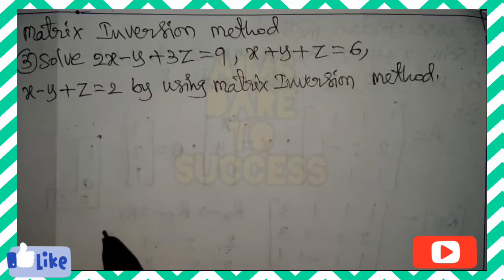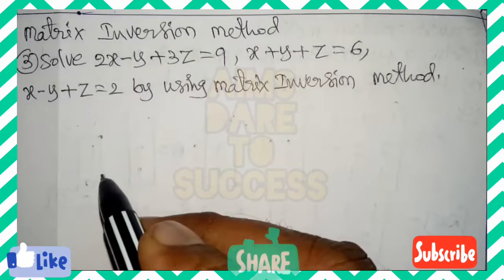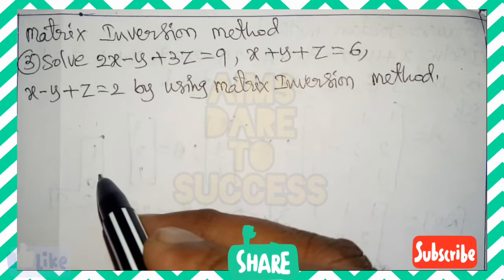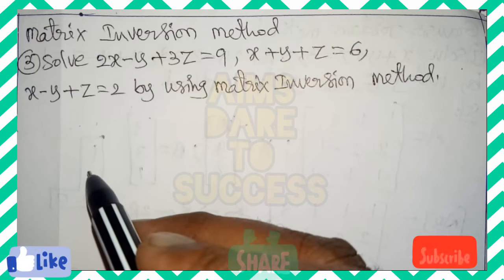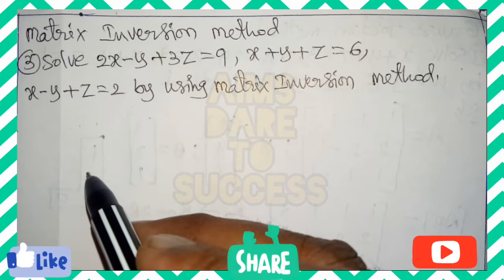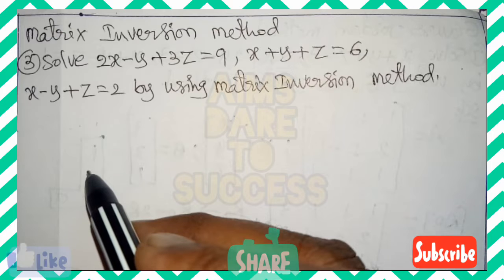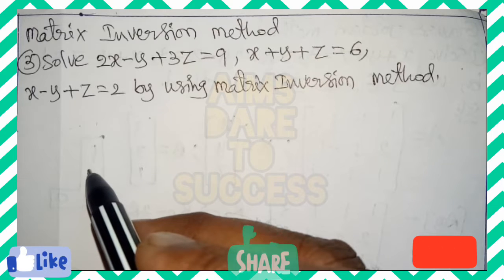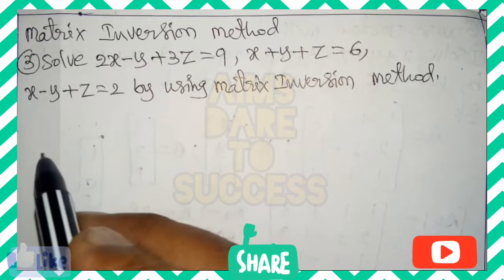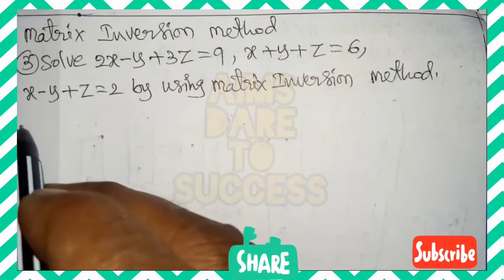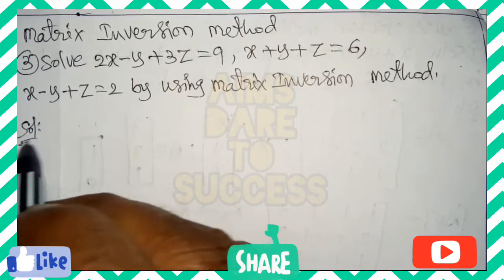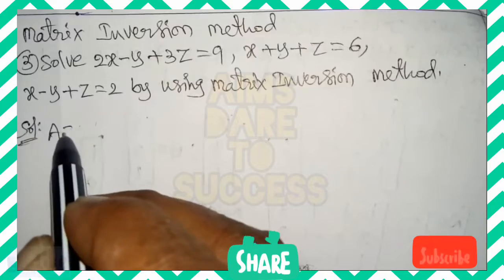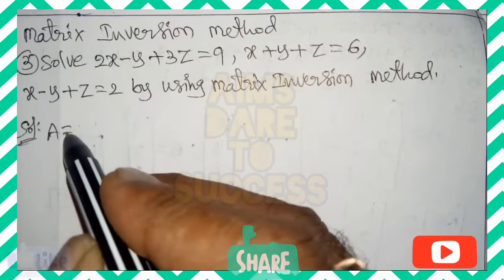Hi, hello, namaste my dear students, welcome to our YouTube channel 'Aims Dare to Success'. Today we are discussing the matrix inversion method — a very important previous question (VIP question). Solve: 2x minus y plus 3z equals 9, x plus y plus z equals 6, x minus y plus z equals 2, by using the matrix inversion method.